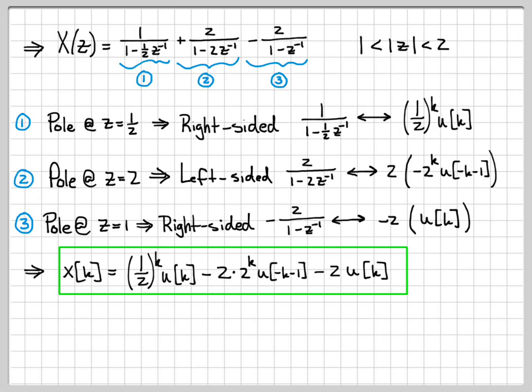This is an example of inversion by partial fraction expansion: decompose into simple terms that you can look up in a table. The key thing to be careful about is you cannot automatically assume right-sided or left-sided — you must make your choice on each term independently, always choosing to intersect with the given region of convergence.